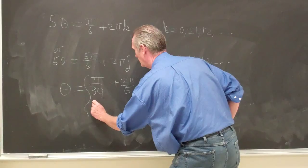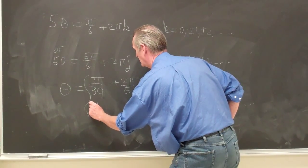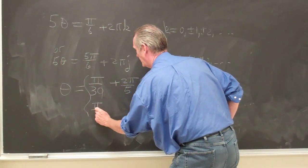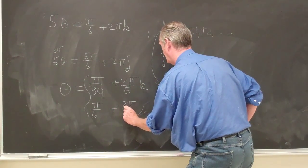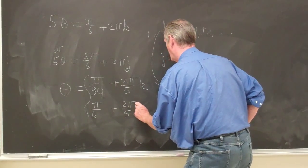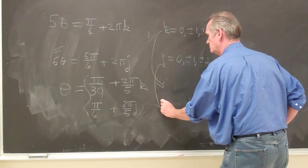Or 5 theta is equal to pi over 6 plus 2 pi over 5 times j, and j has the same range as before.